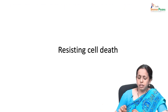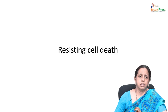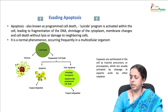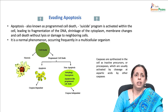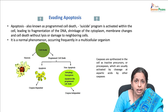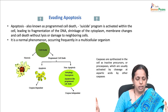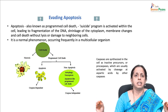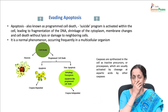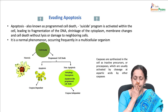We move on to another hallmark of cancer — how cancer resists cell death. One very important hallmark is evading apoptosis. Apoptosis, also known as programmed cell death or the suicide program, is activated within the cell and leads to fragmentation of DNA, shrinkage of cytoplasm, membrane changes, and cell death without lysis or damage to neighboring cells. It is a normal phenomenon that occurs in most multicellular organisms.